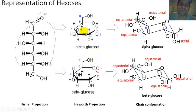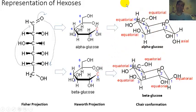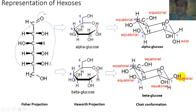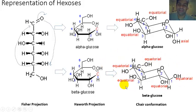Because these are six carbons, we can also translate the Haworth projection into the chair conformation. This is generally not seen a lot in biochemistry textbooks because the equatorial and axial arrangements of each substituent may not directly relate to the Haworth projection. However, it's worth noting that the beta anomer of glucose, when translated to the chair conformation, has the anomeric OH — attached to the anomeric carbon — in an equatorial position, as well as all other substituents including the CH₂OH. They're all equatorial.